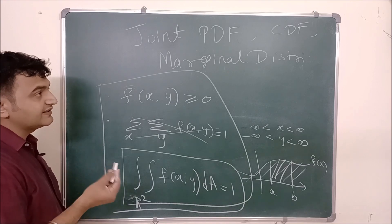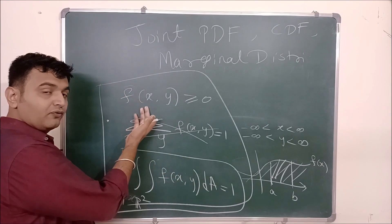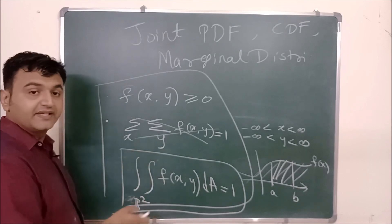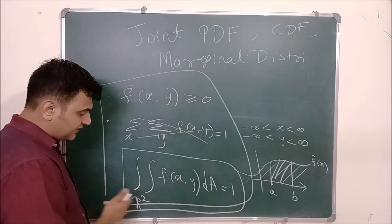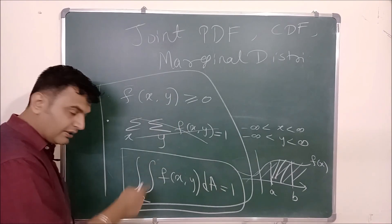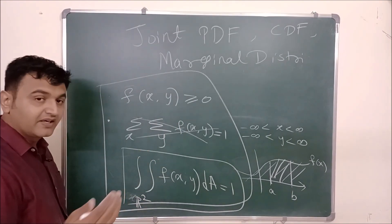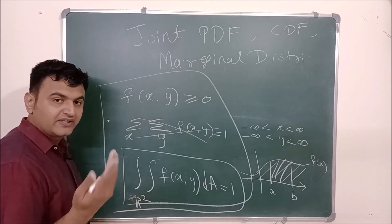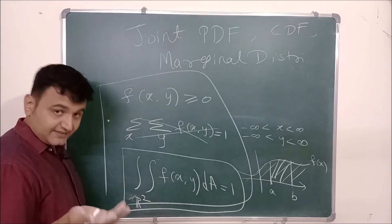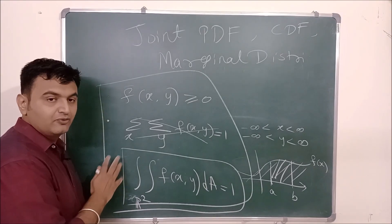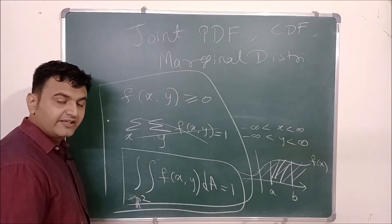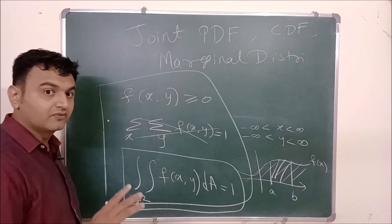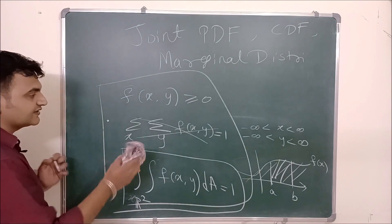What is joint CDF? It follows the same concept. This was for two variables. For three variables it will be f(x, y, z) ≥ 0, and you will have triple integration. Similarly for four, five variables — if you have n number of variables, you will have n number of integrations. So if someone asks about the application of multiple integration — why we study triple, fourth-order, or fifth-order integration when we cannot visualize — this is used when you play with datasets having more than one random variable. That is when we use n-fold integration.